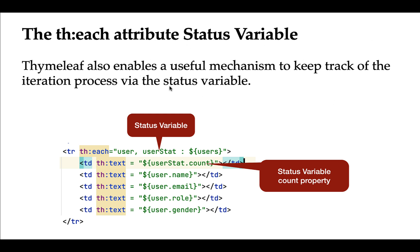Thymeleaf also enables a useful mechanism to keep track of the iteration process. Consider the code snippet here — we are iterating over a list of users using th:each, and here is the syntax to define a status variable for th:each: we just need to provide a comma followed by the status variable name. The status variable has multiple properties; for example, 'count' is one property we can use to count the iteration process.